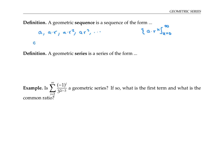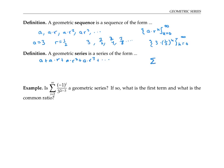For example, if a is three and r is one half, the sequence would be three, three halves, three fourths, three eighths, and so on, which could be written as three times one half to the k, where k ranges from zero to infinity. A geometric series is the series you get by adding all these numbers up: a plus a times r plus a times r squared, and so on, which can be written in summation notation as the sum from k equals zero to infinity of a times r to the k.